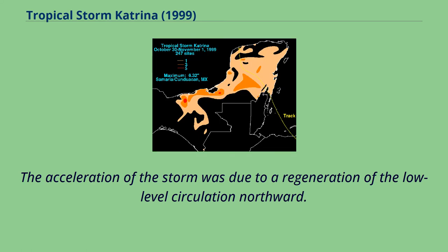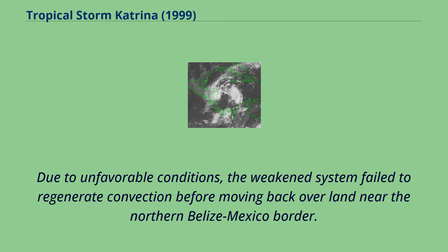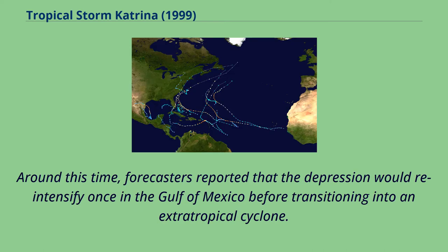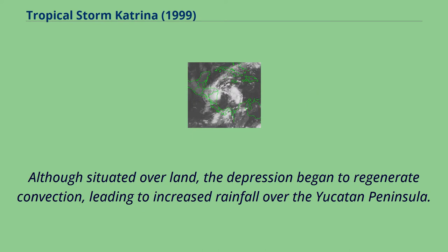The acceleration of the storm was due to a regeneration of the low-level circulation northward. Due to unfavorable conditions, the weakened system failed to regenerate convection before moving back over land near the northern Belize-Mexico border. Around this time, forecasters reported that the depression would re-intensify once in the Gulf of Mexico before transitioning into an extra-tropical cyclone. Although situated over land, the depression began to regenerate convection, leading to increased rainfall over the Yucatan Peninsula.